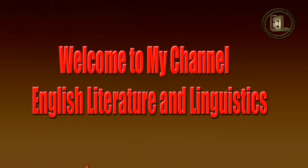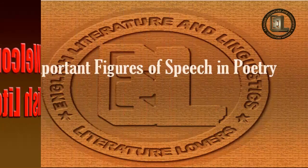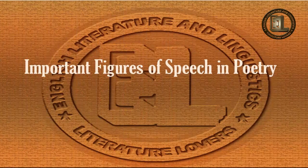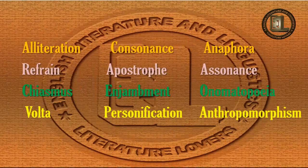Hello, English students and all viewers, welcome to my channel — English Literature and Linguistics Channel for literature lovers. This is Part 4 of a series of videos all about poetry. In the current video, I'm going to discuss some important terms regarding poetry: alliteration, consonance, anaphora, refrain, apostrophe, assonance, chiasmus, enjambment, onomatopoeia, volta, personification, and anthropomorphism.